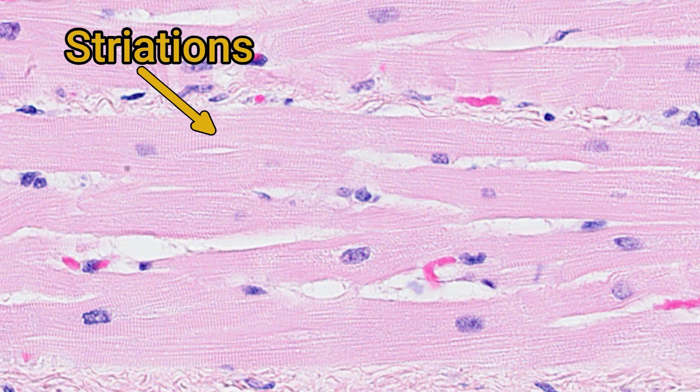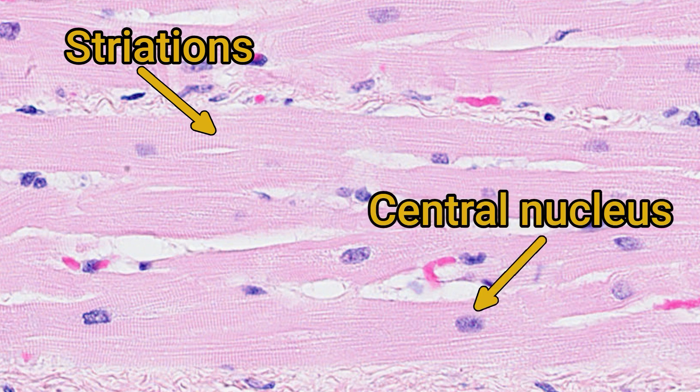You can also see the cell nuclei. Cardiomyocytes are syncytial cells, meaning that they are produced by cell fusion. Each of those component cells had a nucleus, so the final cardiomyocyte will have multiple nuclei, often located centrally within the cell.